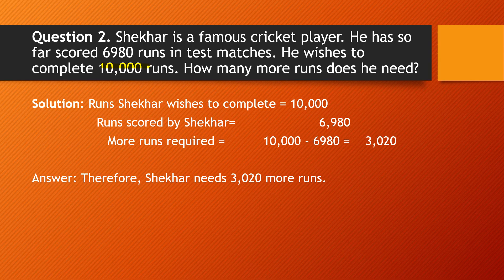Most of you follow cricket matches, so this is relatable. Since 10,000 is the higher number, we write it first. Runs Shekhar wishes to complete = 10,000; runs already scored = 6,980. More runs required = 10,000 − 6,980 = 3,020. So Shekhar needs 3,020 more runs to complete 10,000.